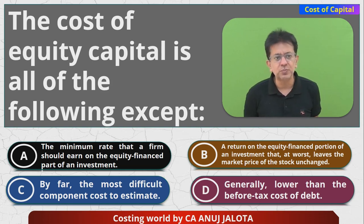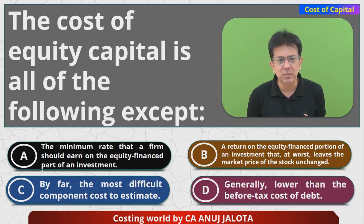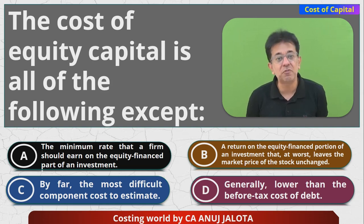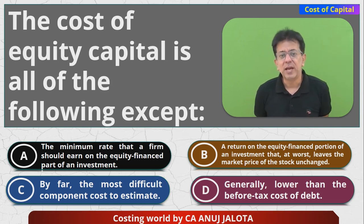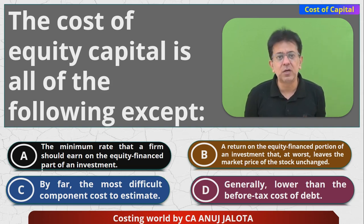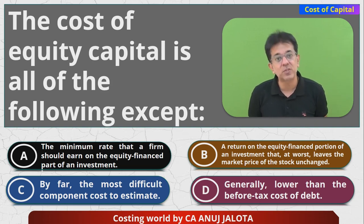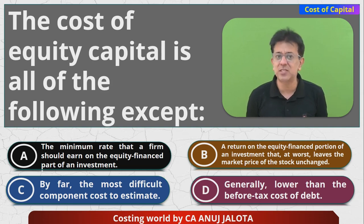Ke is the minimum return that shareholders want. If the company earns that much, shareholders will be happy and keep the share — so option B is also correct. Option A is also correct: it is the minimum return you need to earn on the equity-financed part. Because there is a minimum cost of capital, you have to give that back to equity shareholders, which becomes a cost for you.